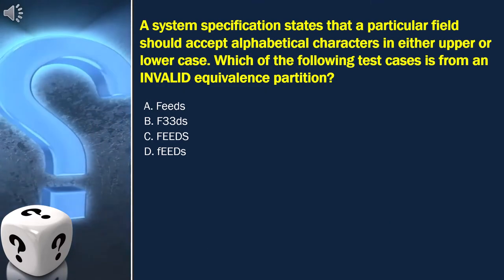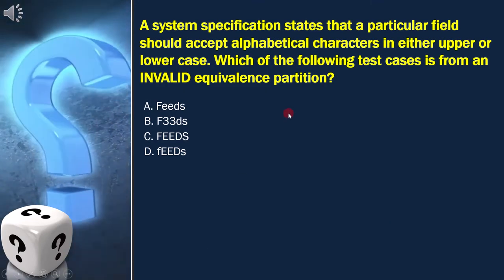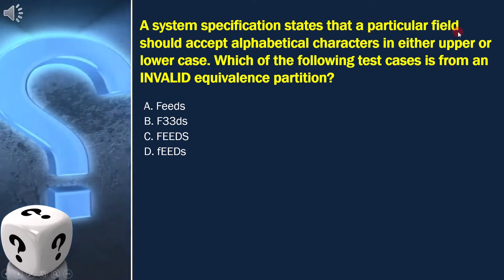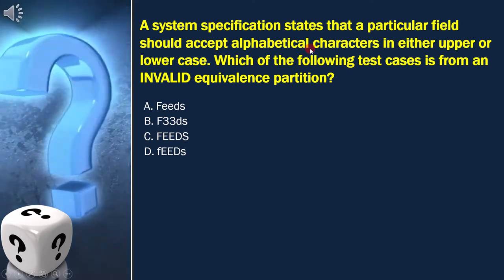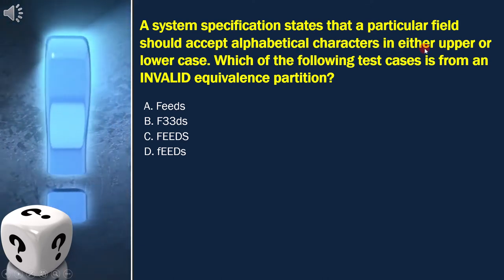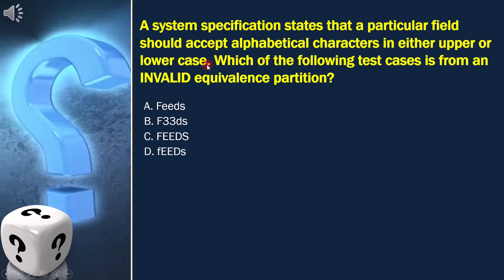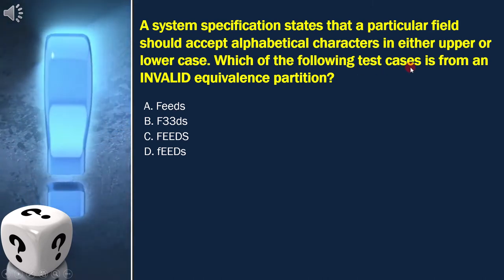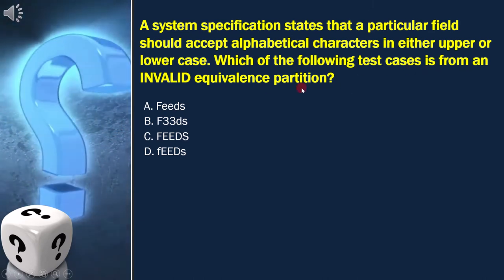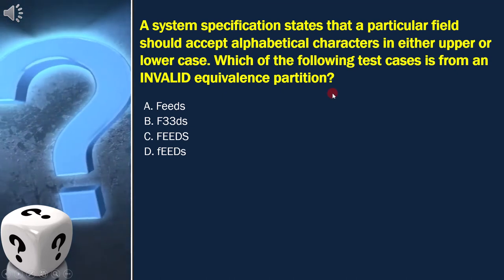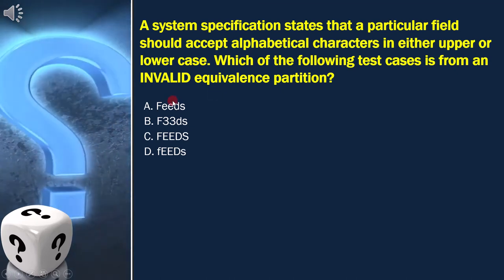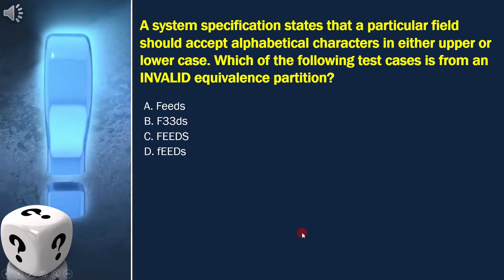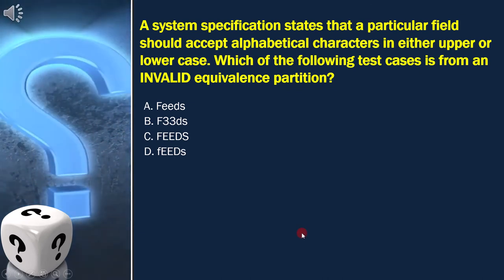Here the question is: a system specification states that a particular field should accept alphabetical characters in either uppercase or lowercase. Which of the following test cases is from an invalid equivalent partition? Let's draw the equivalence classes diagram to get the answer.